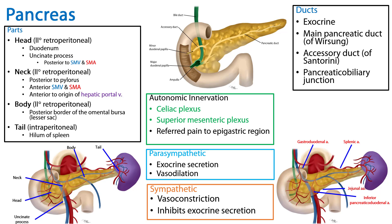We've discussed the pancreas — its parts, their orientations and relative locations to other structures, the pattern of exocrine drainage, blood supply, and innervation. This is your summary slide. Thank you for your time.